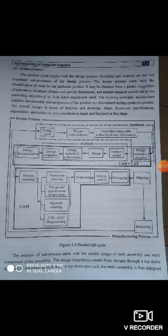This is the Product Life Cycle. Before production, the 4M is very important. The 4M — which includes Material, Machine, Man, and Method — is essential. If we start production, the 4M concept must be applied throughout.